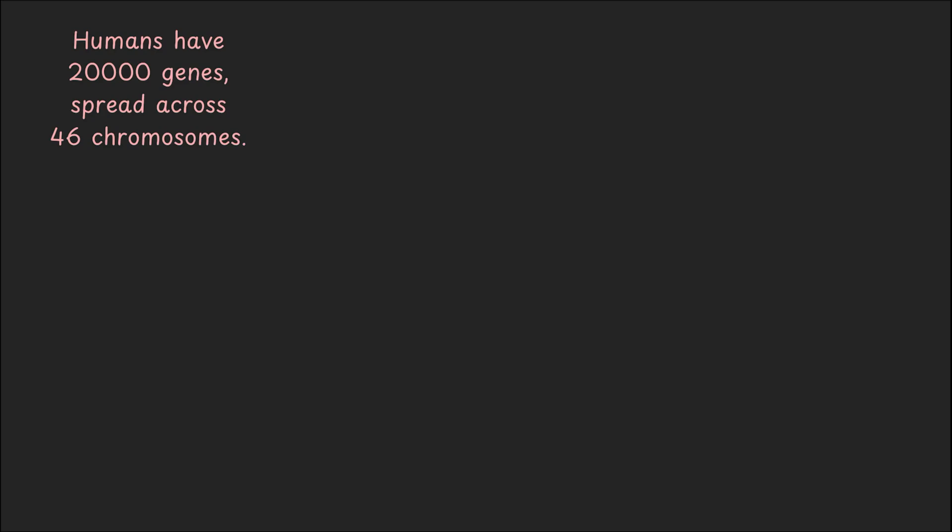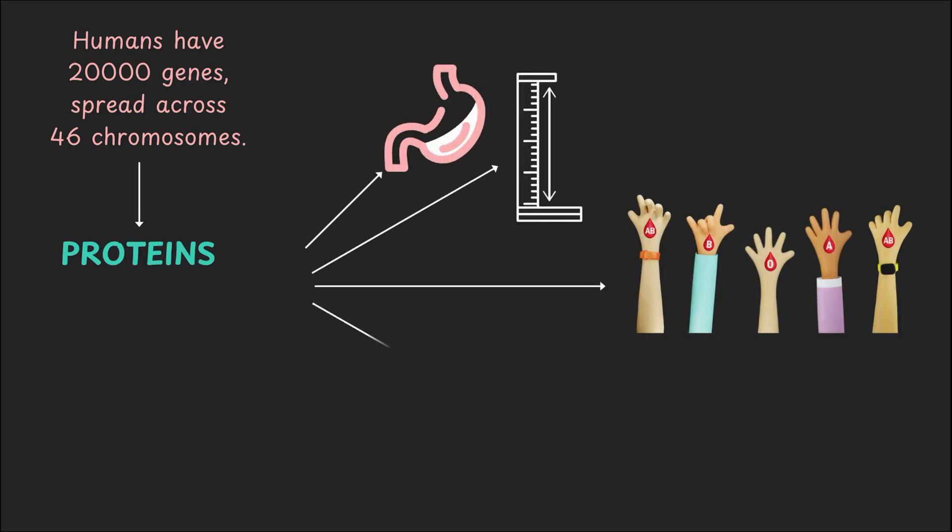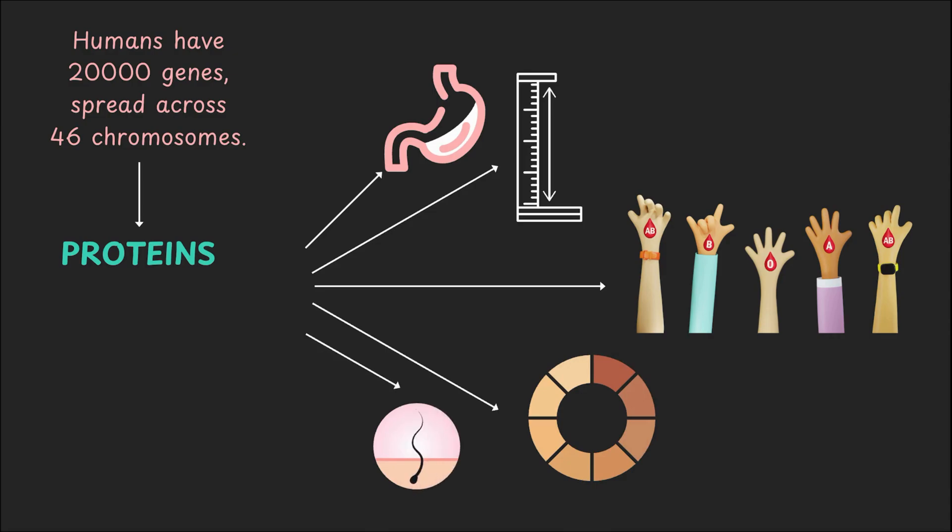And how does your body execute it? By making proteins. Which then decides how you digest milk, your height, your blood group, your skin color, so on and so forth. In other words, proteins shape how you look and function both on the inside and on the outside.